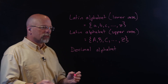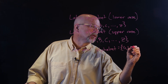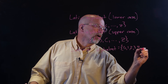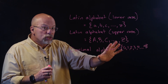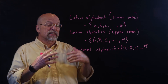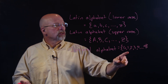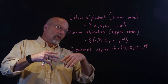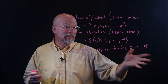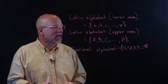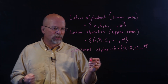The decimal alphabet would be 0, 1, 2, 3, 4, all the way up to 9. We don't include 10 in this, because 10 can actually be created as a string using the elements 1 and 0. We don't care about 17, because that would be the element 1 concatenated with the element 7. That word 'concatenated' is something we're going to get to in a minute.